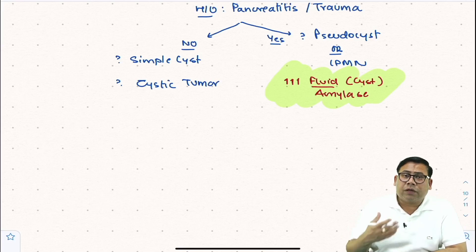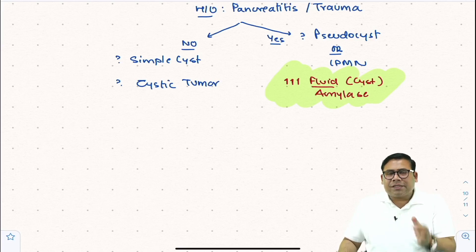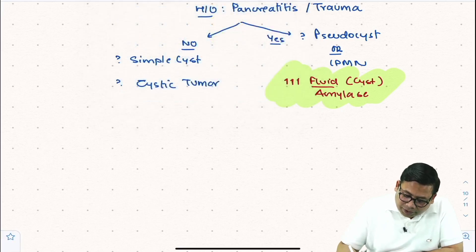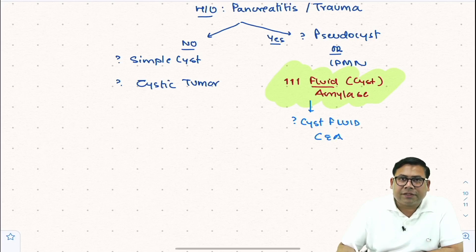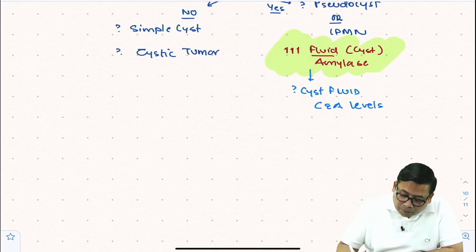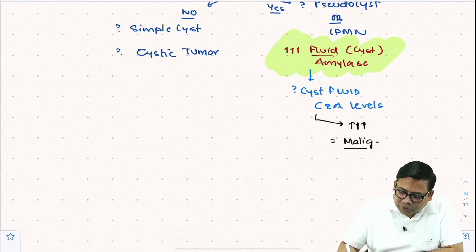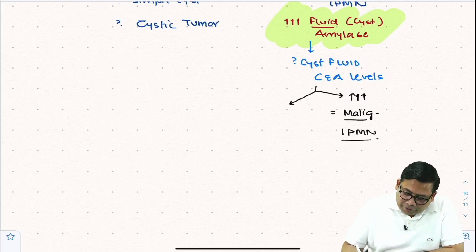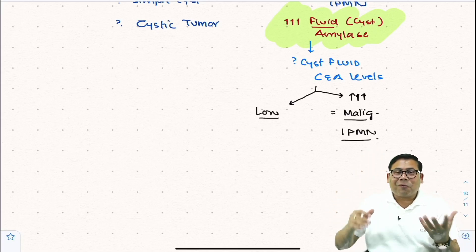When elevated cyst fluid amylase is found, you then need to check cyst fluid CEA levels to distinguish malignancy from pseudocyst. Malignancy will always have elevated CEA levels, whereas a pseudocyst will not. If cyst fluid CEA levels are elevated, you are dealing with a malignancy — specifically IPMN. If CEA is low and amylase is high, the diagnosis is pseudocyst.